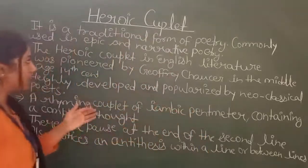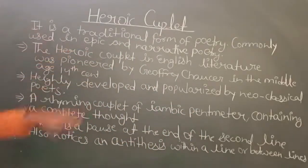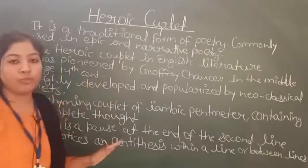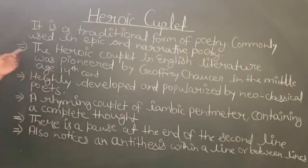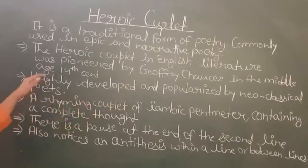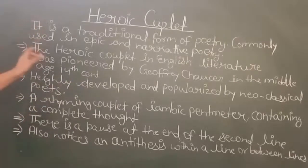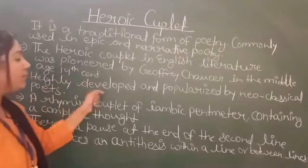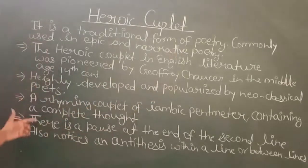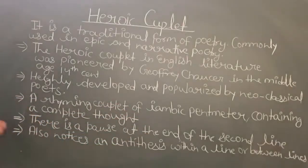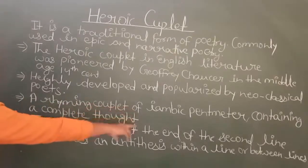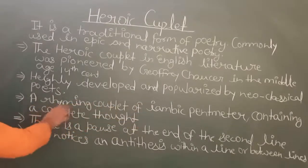Heroic Couplet is a literary device and it is a traditional form of poetry, commonly used in epic and narrative poetry. The Heroic Couplet in English Literature was pioneered by Geoffrey Chaucer in the Middle Age of the 14th century. It was highly developed and popularized by neoclassical poets. It is a rhyming couplet of iambic pentameter containing a complete thought.